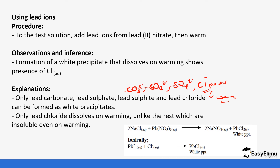That brings us to the end of our lesson on hydrogen chloride gas and hydrochloric acid. Notice how qualitative analysis is integrated into the theoretical content — make sure you can apply the separation and identification steps we have covered, as they will form the basis of qualitative analysis questions in Paper 3. In the next lesson we are going to be looking at the large-scale production of hydrochloric acid — see you then.